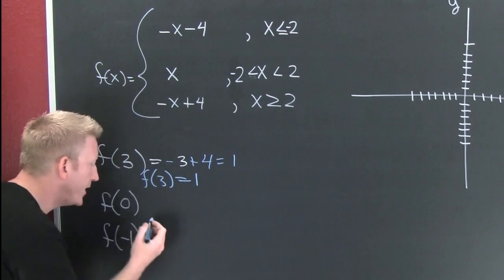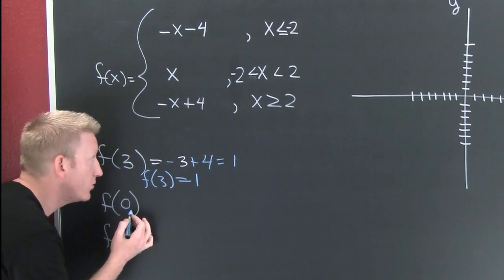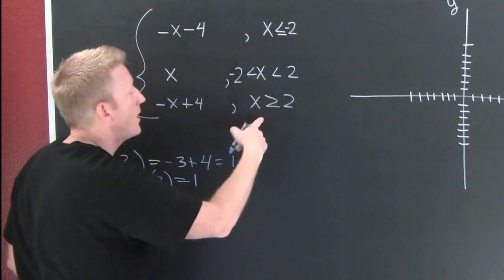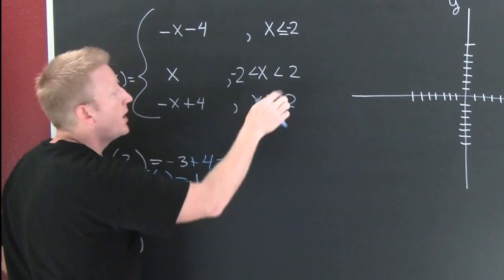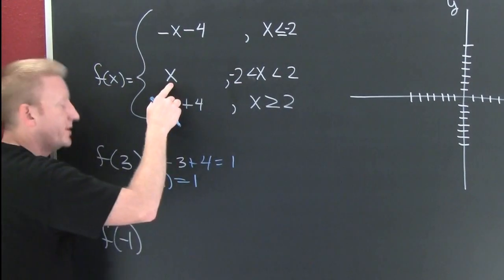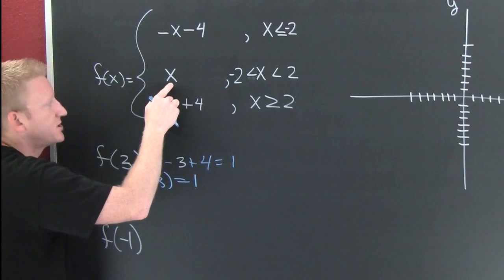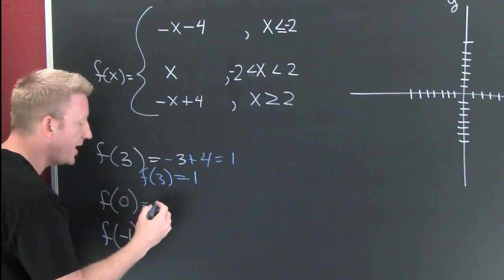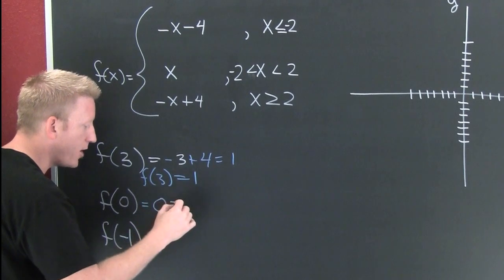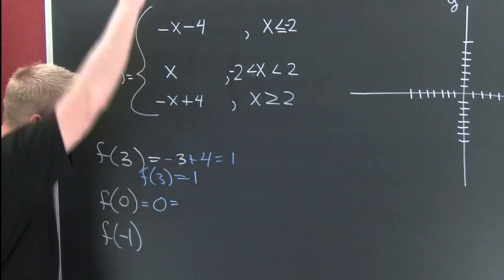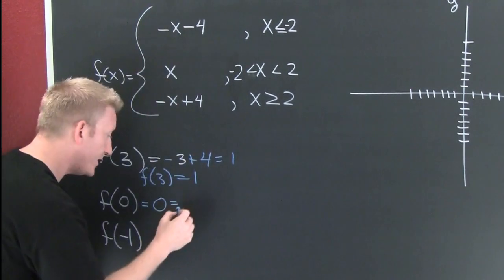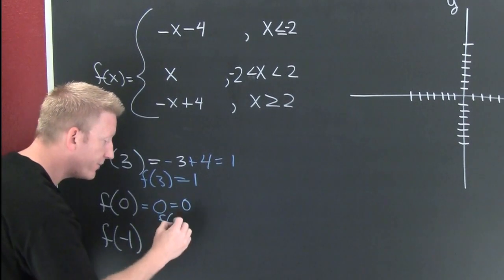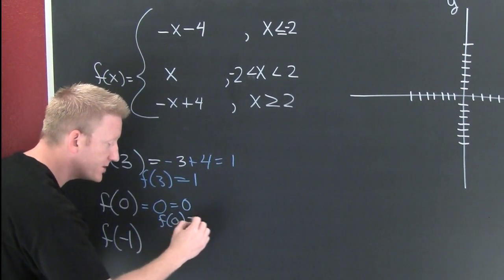Now let's try x equals 0. Which piece am I in? I'm not less than minus 2, I'm not bigger than 2 — I'm in between those two. Use the middle piece. So everywhere I see an x, I'm going to put a zero. Big fat zero. So f of 0 is 0.